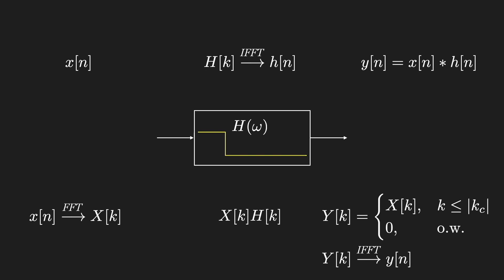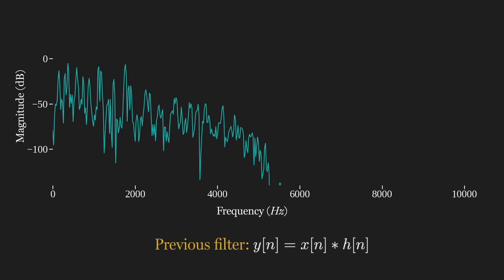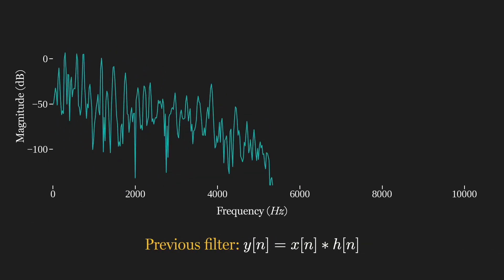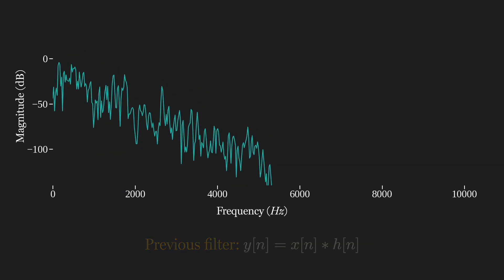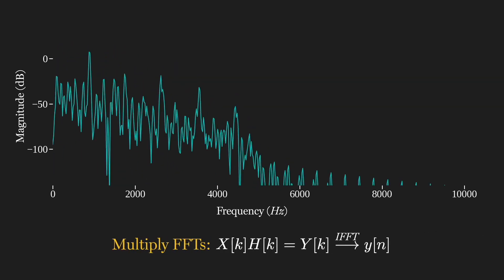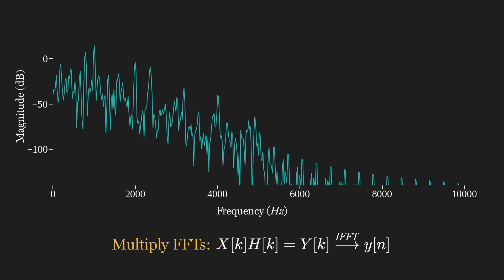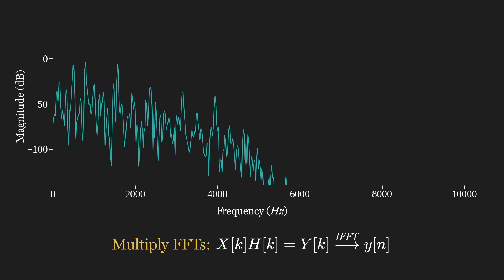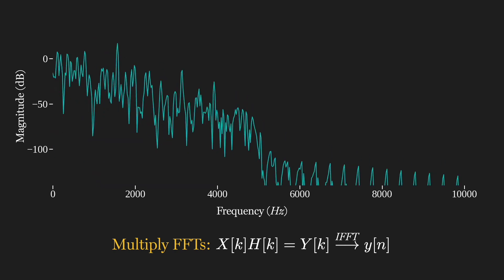We'll start by listening to the previous windowed sinc filter, and then compare that to the FFT multiplication method. Uh-oh, this sounds terrible. What's gone wrong?